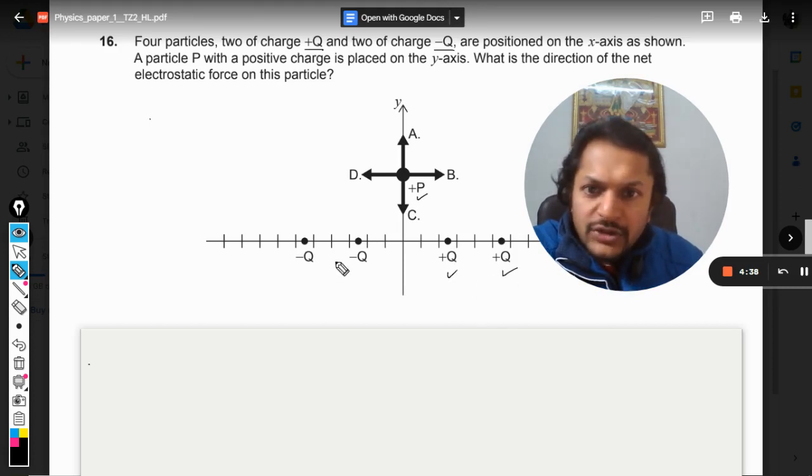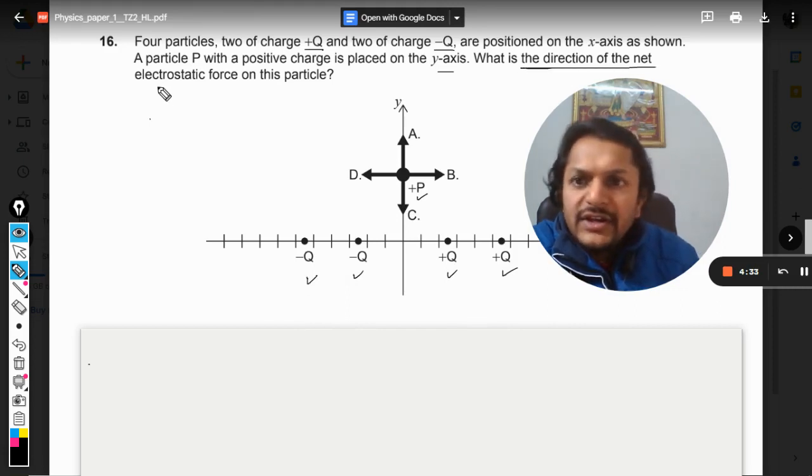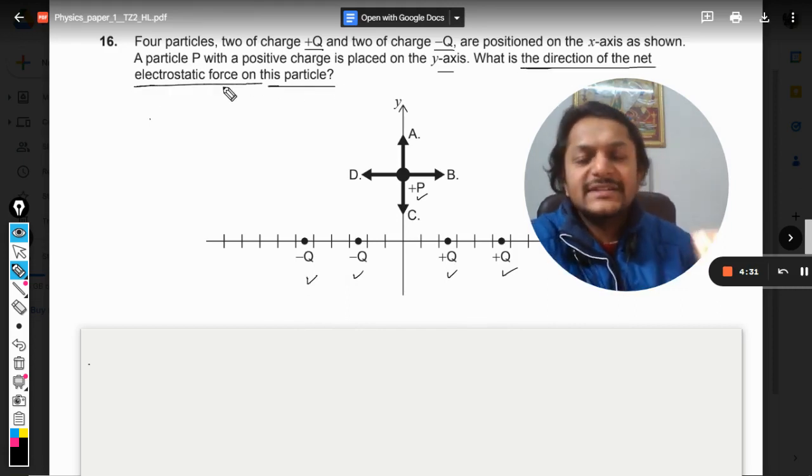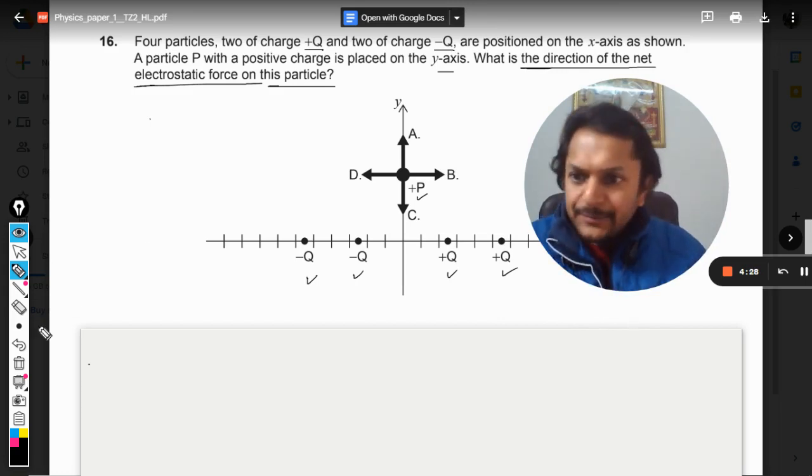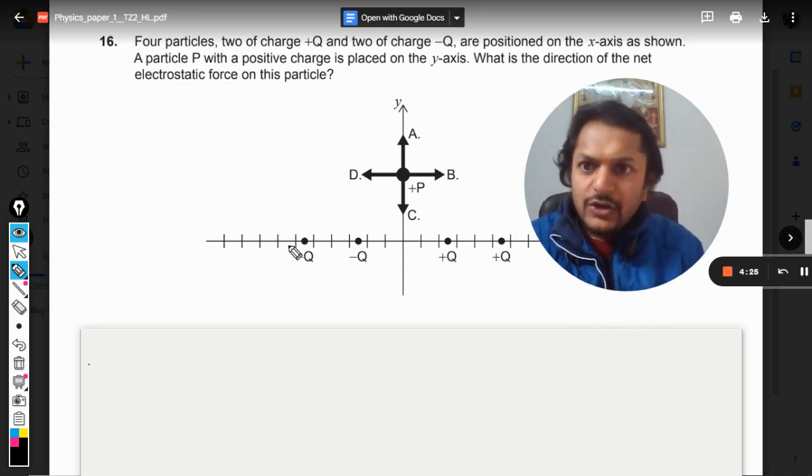So this is another charge that is placed. These two charges are positive and these two charges are negative. What is the direction of the net electrostatic force on this particle? Okay, so let us see.